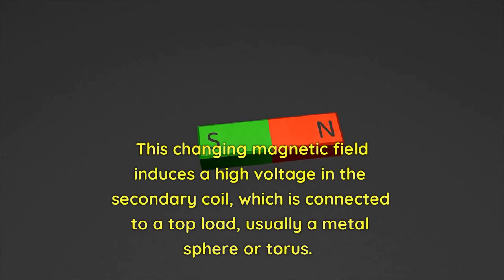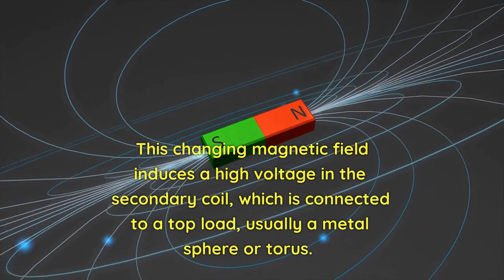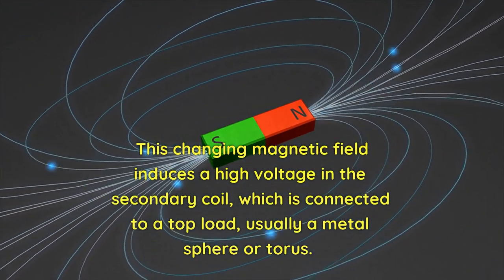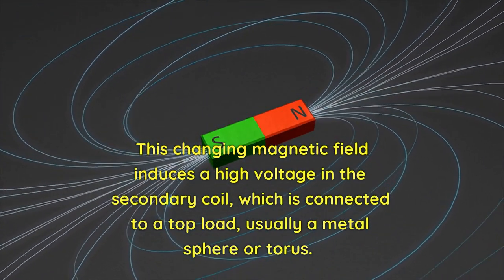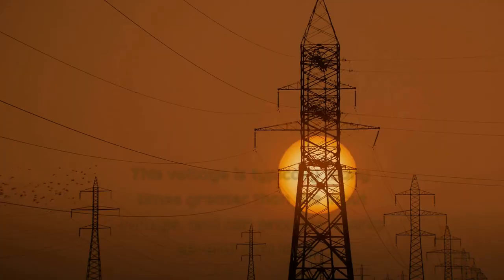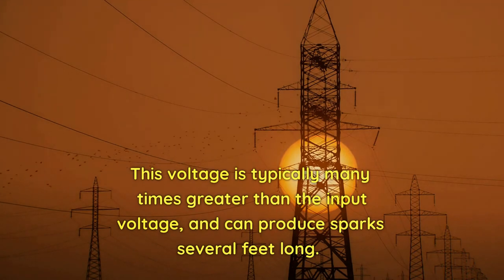This changing magnetic field induces a high voltage in the secondary coil, which is connected to a top load, usually a metal sphere or torus. This voltage is typically many times greater than the input voltage, and can produce sparks several feet long.